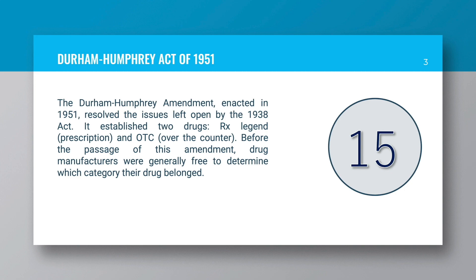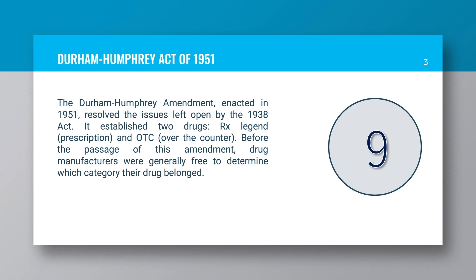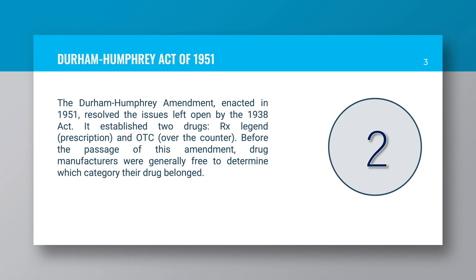Durham-Humphrey Act of 1951: The Durham-Humphrey Amendment enacted in 1951 resolved the issues left open by the 1938 Act. It established two drug categories: Rx (Legend) and OTC (over-the-counter). Before the passage of this amendment, drug manufacturers were generally free to determine which category their drug belonged.